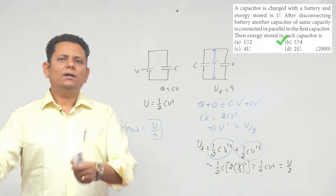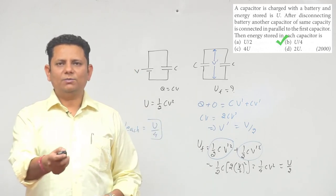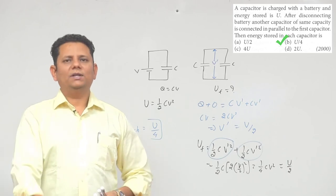So U/4 is each capacitor's energy, total energy is U/2. Based on this, we can say option B, U/4, would be the right answer.